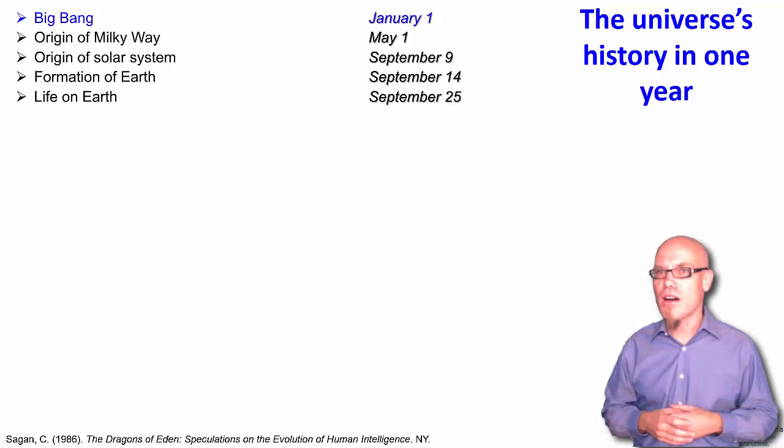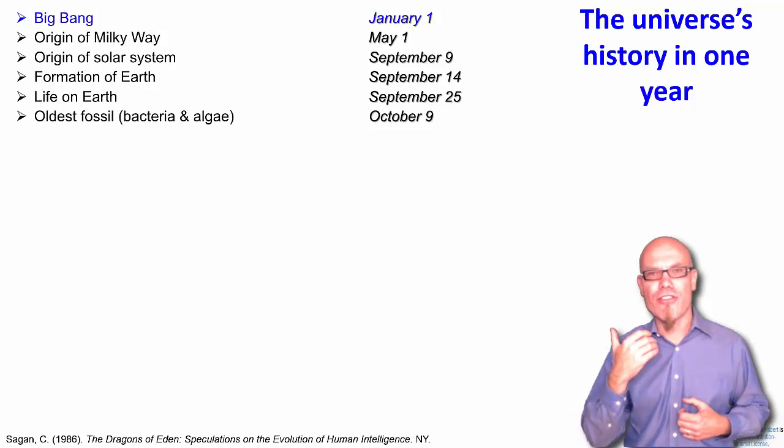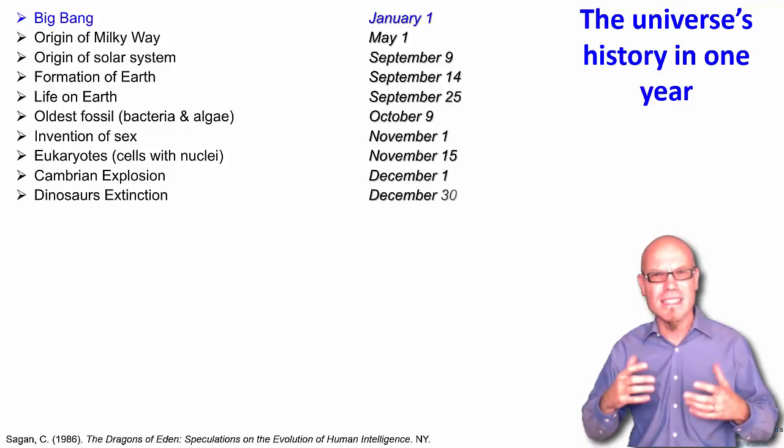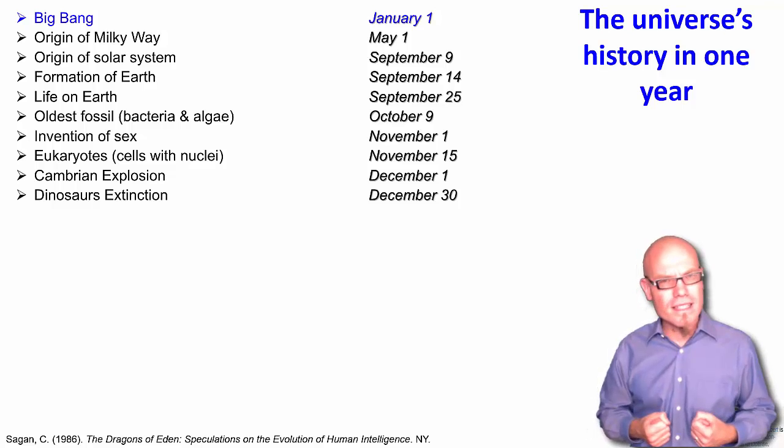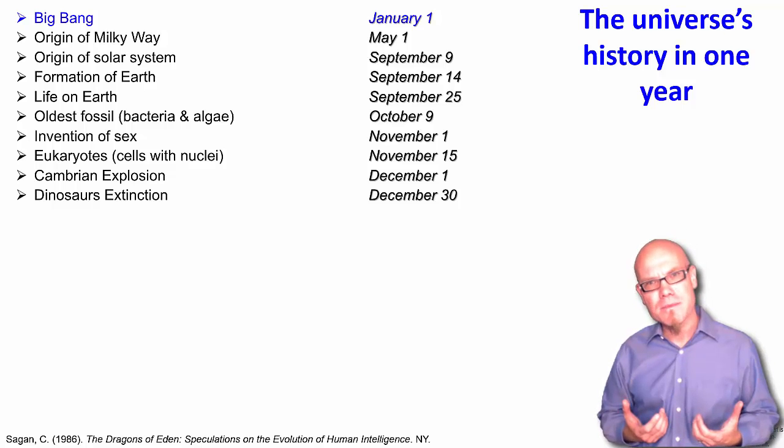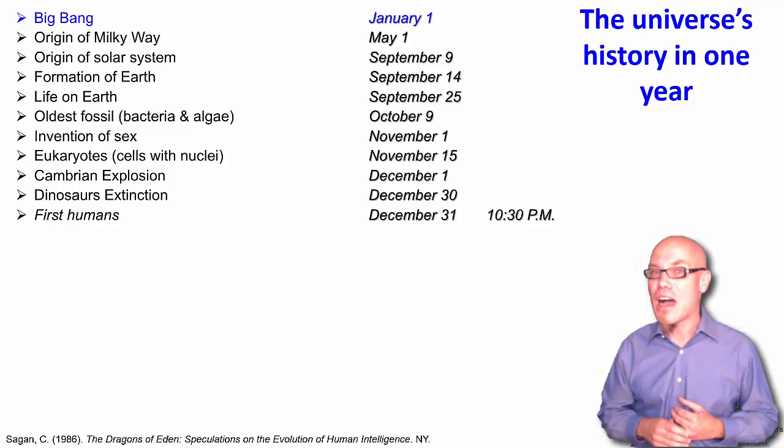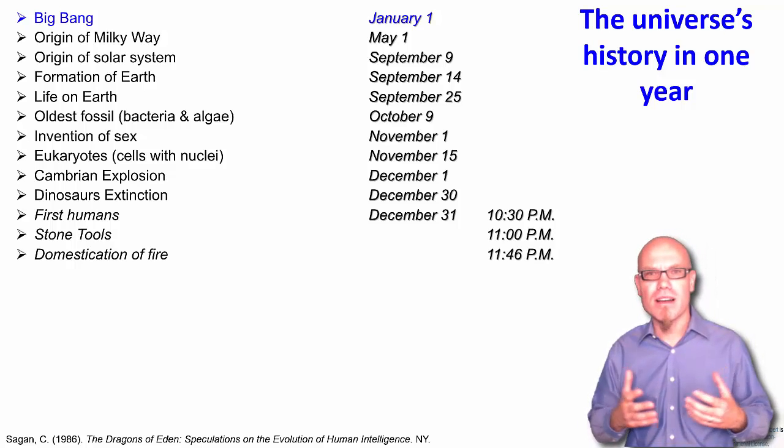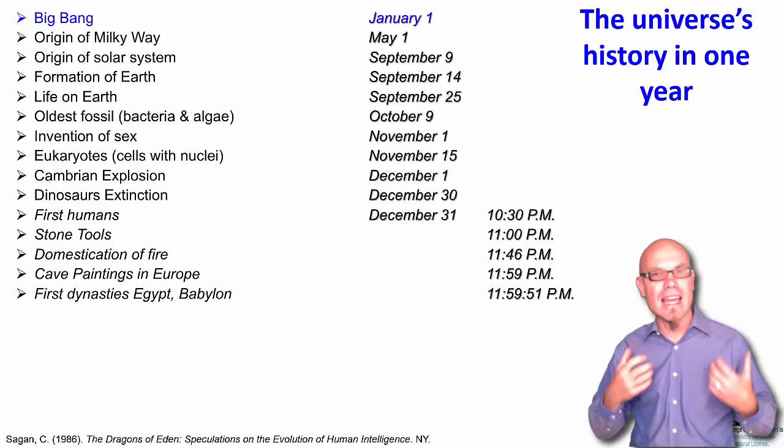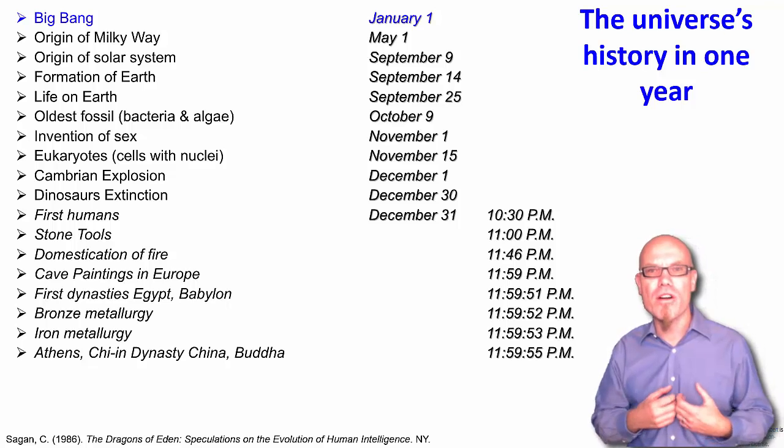Well, that is pretty far advanced already in the year. The oldest fossils, they date back to October 9th. Then come the first cells, the Cambrian explosion, the dinosaurs. What, the dinosaurs? They would come into the scene basically in December and they would go extinct on December 30th. That's a day before the year's ends. The first humans would come onto the scene on December 31st at 10:30pm. That's an hour and a half before midnight. The first stone tools would come about at 11pm. The first cave paintings, a couple of minutes before midnight. The Chinese dynasties, the dynasties in Egypt, Babylon, the Bronze Age, the Iron Age, that would be less than 10 seconds before midnight.